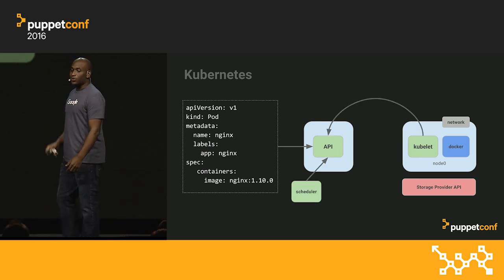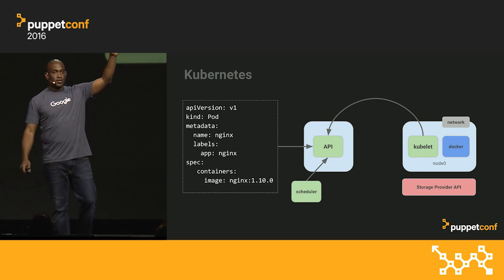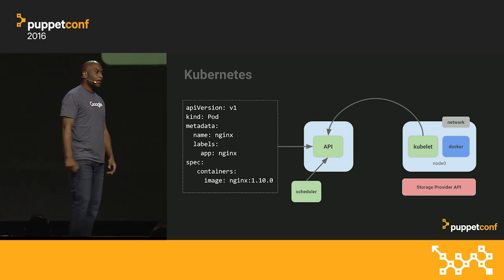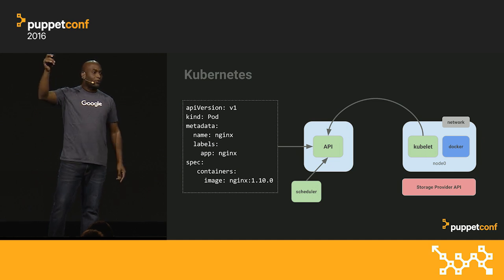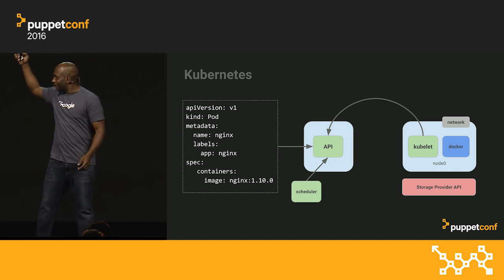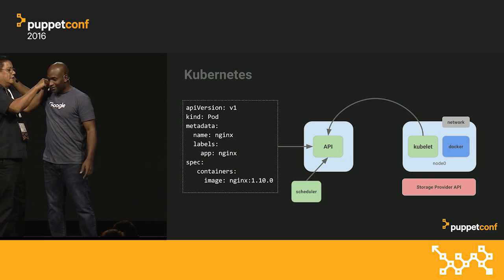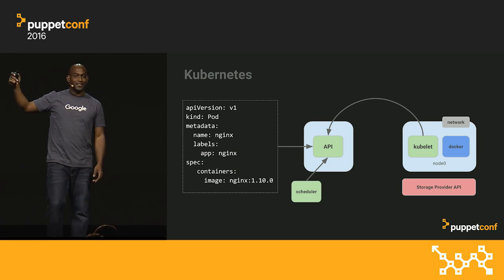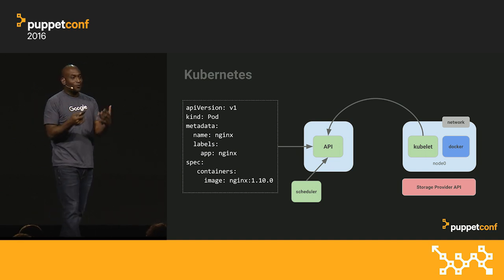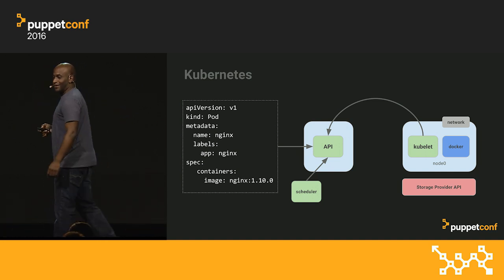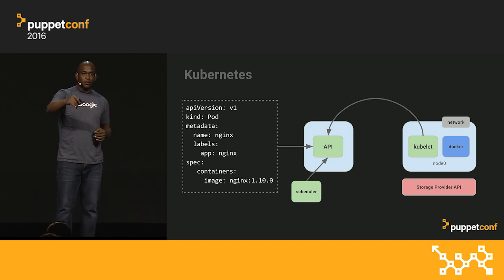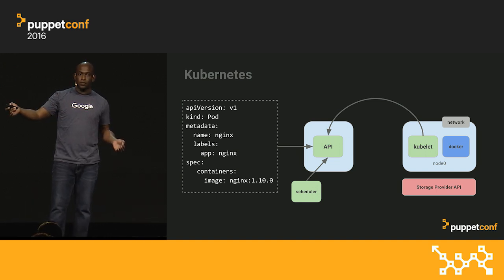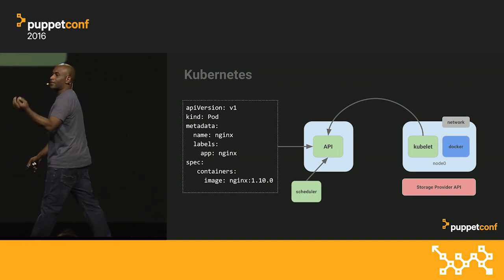Once we have that, in order to assign workloads to machines, we need a scheduler. How many people are using a scheduler? Everyone's hands should be up — your laptop probably has more than one core. When you launch your process on your machine, something has to choose what CPU to run it on. That's the kernel's job. So now I have to explain scheduling to you. The fastest way to do it is to play Tetris.